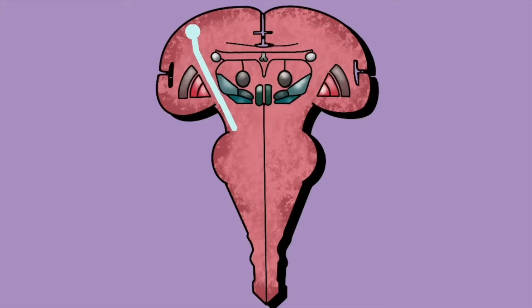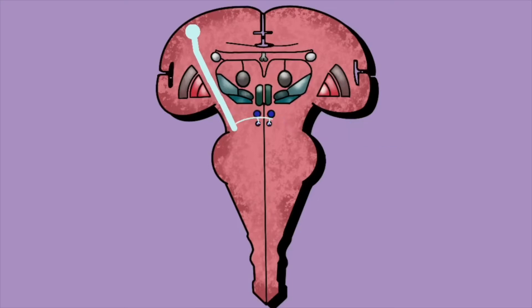The tract continues into the midbrain, running very closely alongside the corticospinal tract fibers, so they often get damaged together. Here we begin to see bilateral innervation to most nuclei. The first nucleus shown provides bilateral innervation to the oculomotor nerve, which has its cell bodies in the midbrain and whose motor fibers innervate the majority of the extraocular muscles.